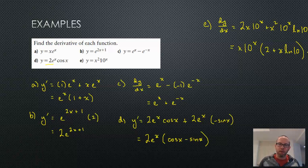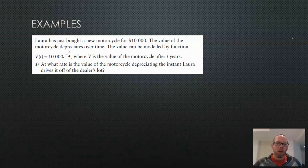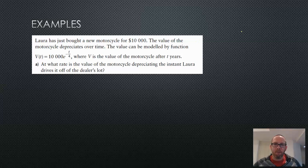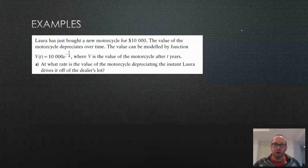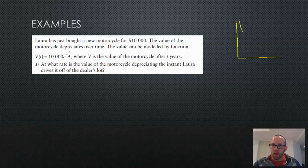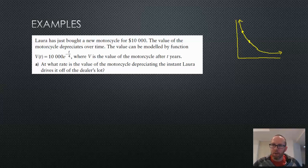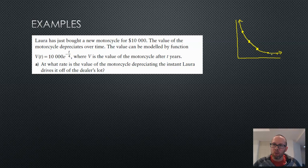Let's do a little application problem — an application involving an exponential function where the base is Euler's number e. Loris just bought a new motorcycle, and the value of the motorcycle depreciates over time. We're modeling the value with a decreasing exponential. This is one way of modeling depreciation; other ways do exist. The value of the motorcycle will never be zero, but it loses less and less of its value over time.